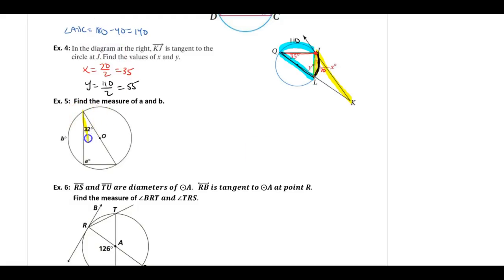Example 5: Angle A intercepts this arc, which is a semicircle, so we know A is 180 divided by 2, or 90 degrees.